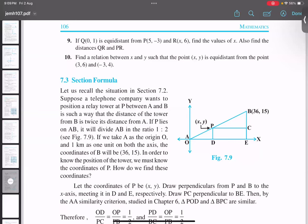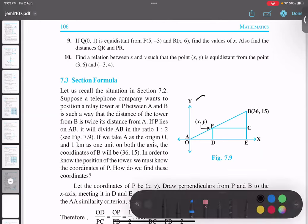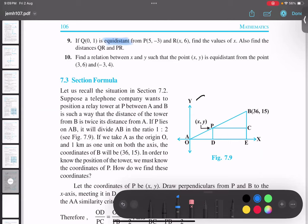So again, in question number nine, they're talking about equidistance. We are already aware what equidistance means. The distance between the two points are equal. So point Q is equidistance from P and from R. So PQ equals to PR.